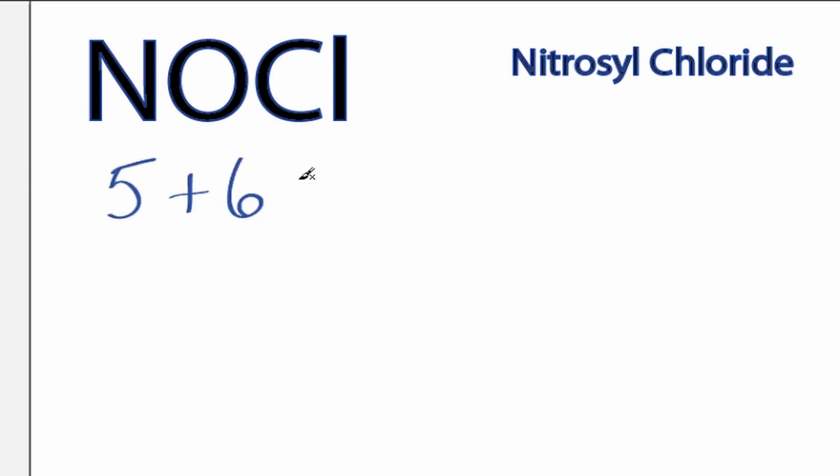Oxygen has 6 valence electrons, and then chlorine has 7 valence electrons, for a total of 18 valence electrons.